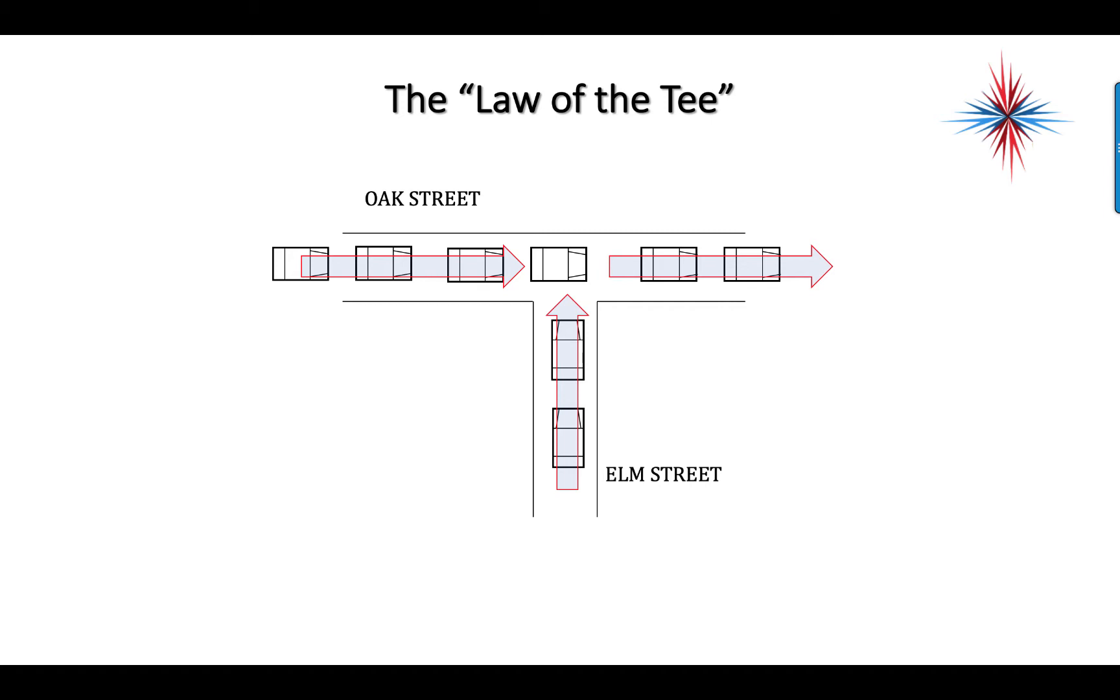We have our main street, which in this case is labeled Oak Street, and then we have Elm Street coming into the tee. Traffic flows through Oak Street and Elm Street joins it - it doesn't go anywhere else. So from the left on Oak Street, this traffic continues, but then Elm Street joins it.